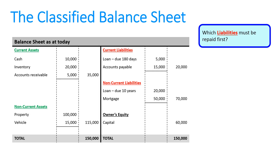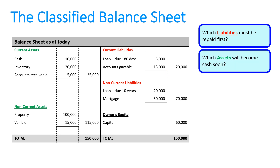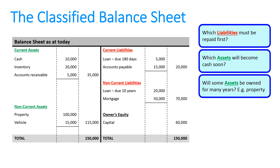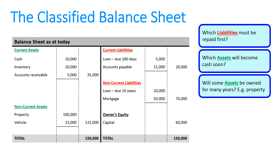Now we can start to answer those original questions. Which liabilities must be repaid first? Clearly these two are due in the next 12 months, so we'll pay those first. Which assets will soon become cash? Inventory and accounts receivable should become cash in the next 12 months. Will our assets be owned for many years? Yes — we have a property and a vehicle, so we expect to own those for more than 12 months.